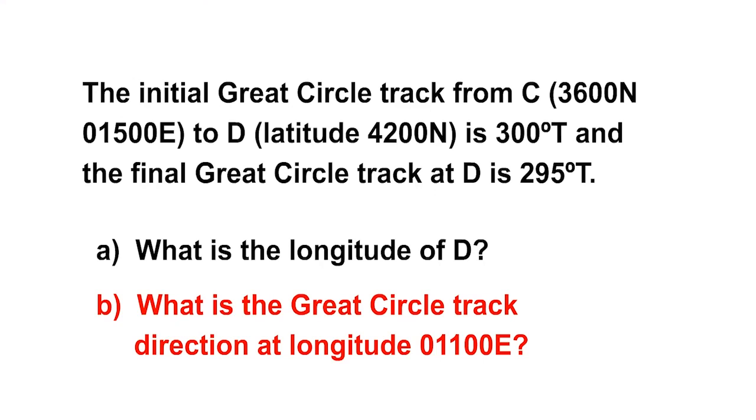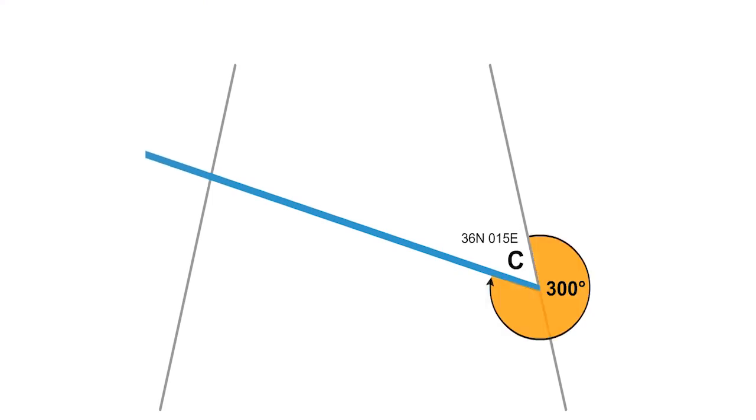As always, you must start with the diagram. We are in the northern hemisphere so again, draw two meridians converging northwards like this. The track from C is 300 so make it the right hand side otherwise it will go off the diagram. This means that the left hand side must be D. Again, check it out for common sense. If it's a track angle of 300 from C, then D must be north west of C.